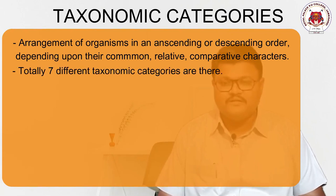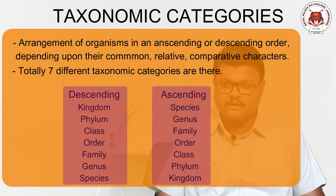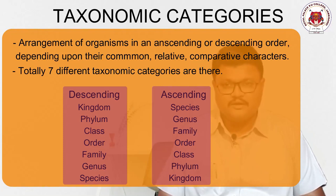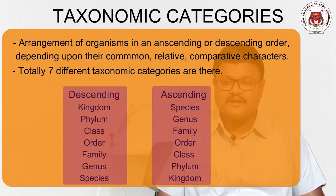There are totally seven different taxonomical categories: Kingdom, Phylum, Class, Order, Family, Genus, and Species. Starting from Kingdom to Species is called descending order, and from Species to Kingdom is called ascending order. Almost all organisms on this planet are completely divided among these seven categories. Today's topic is understanding these categories.